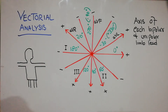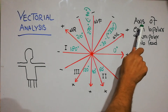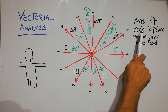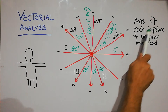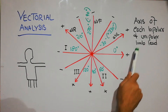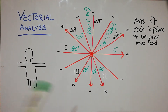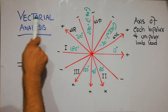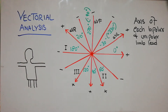Today we are going to discuss the axis of each bipolar and unipolar limb lead. We were basically discussing the vectorial analysis, and in the last lecture we discussed that whenever there is a depolarization occurring in the heart, there are small vectors forming.